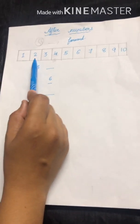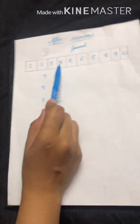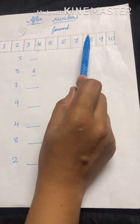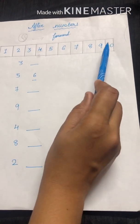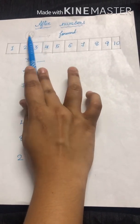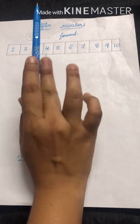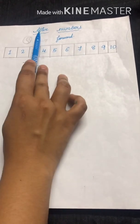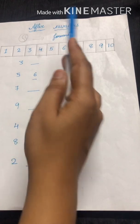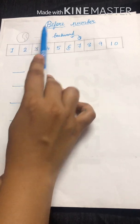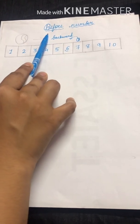Can you see the number line here? 1, 2, 3, 4, 5, 6, 7, 8, 9, and 10. For example, this is a ball, and when the ball moves forward, it is called after number. Same as that, if the ball moves to the backward side, it is called before number.